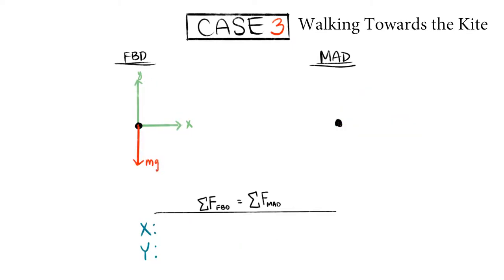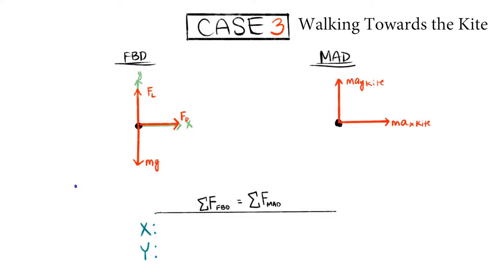For case 3, we're going to deal with the flyer and the kite as a system together. We're going to draw all the forces for the kite as we did before, and draw the mass accelerations the same way as the last two diagrams. From there, we're going to add the flyer into the mix and draw the rope out to the flyer.